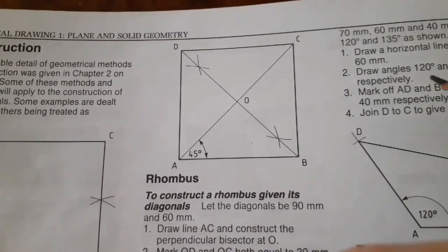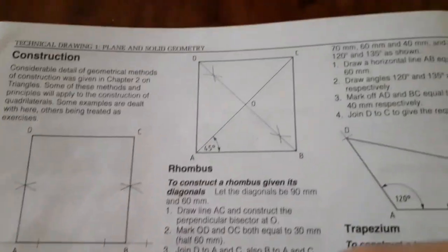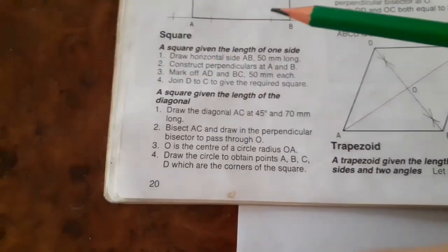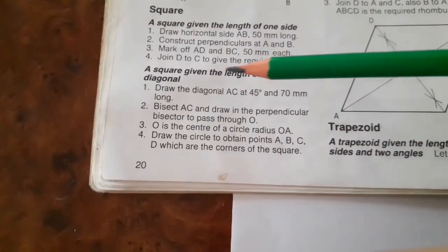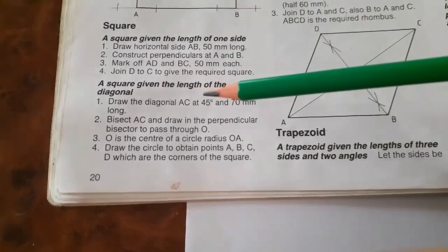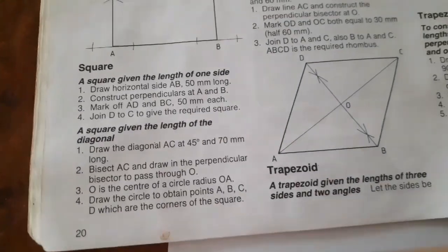Okay students, this video we will be drawing the second question. The second question is to draw a square given the length of the diagonal. The first step is to draw the diagonal AC at 45 degrees and 70 millimeters long.